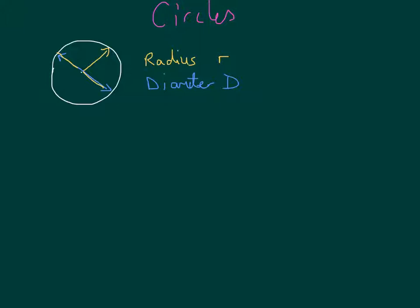We also need to know the circumference. The circumference is the distance all around the outside edge of the circle. It's a bit like the perimeter of the circle. It's got a special name, circumference, and we use a capital C for that.